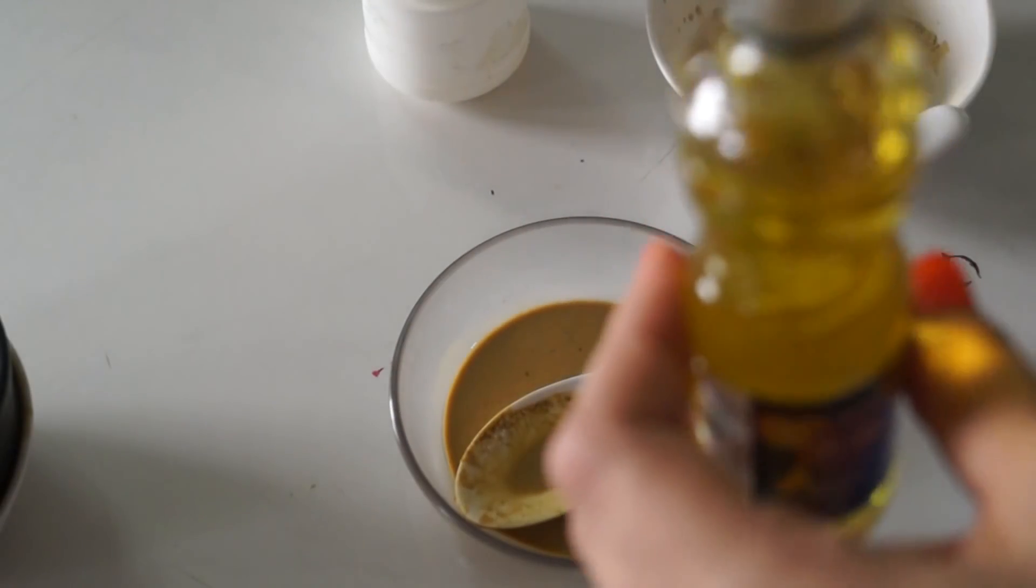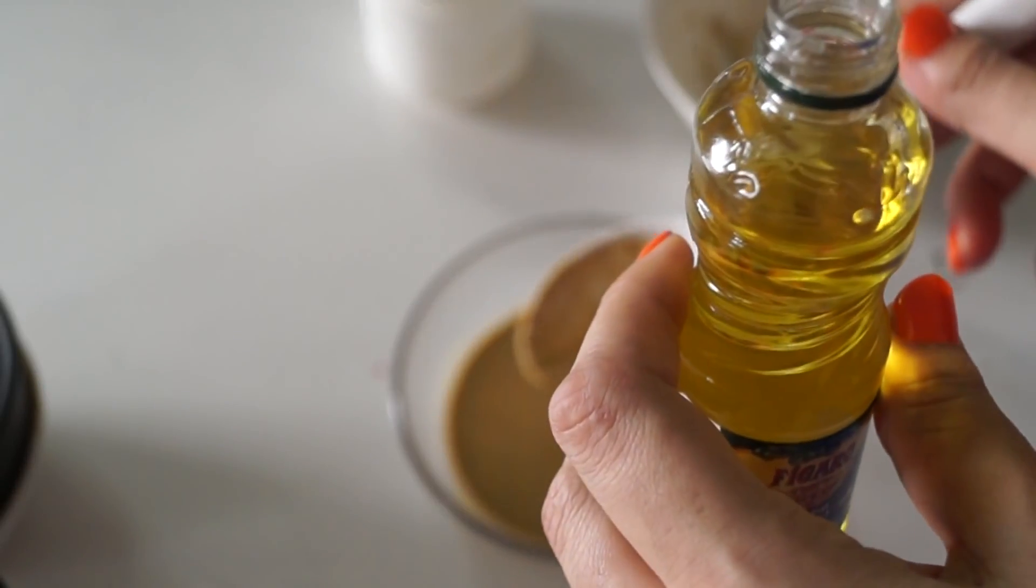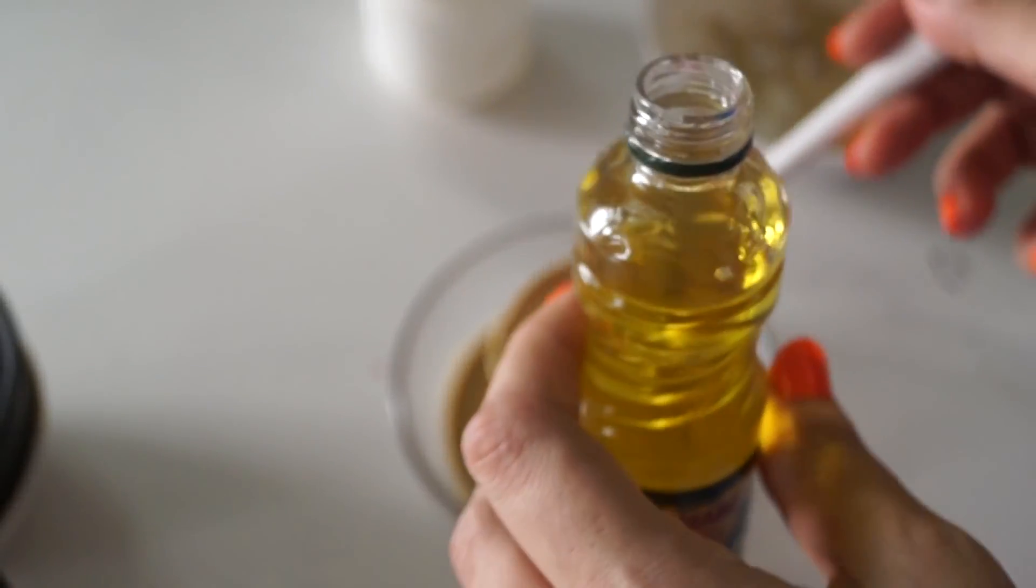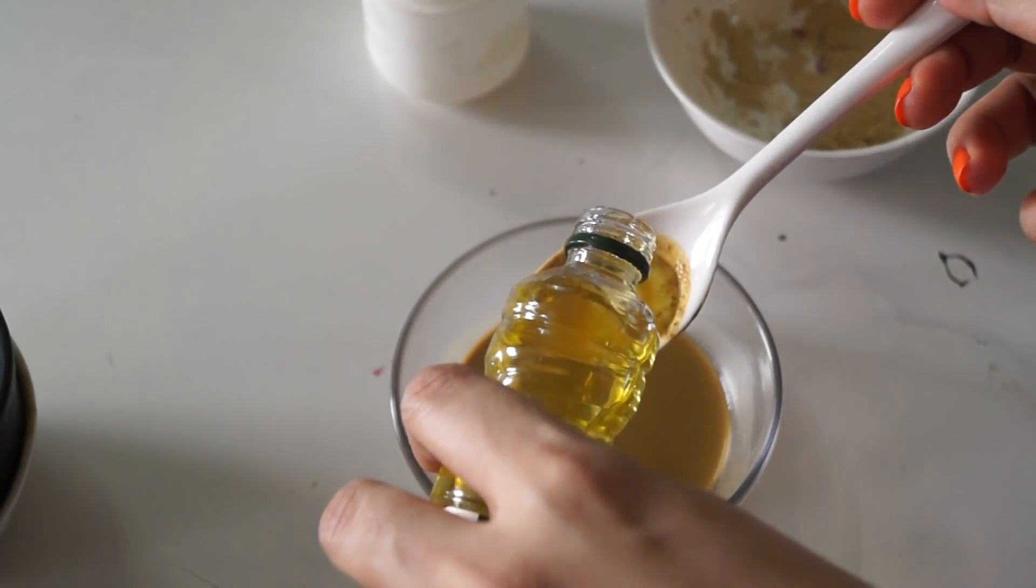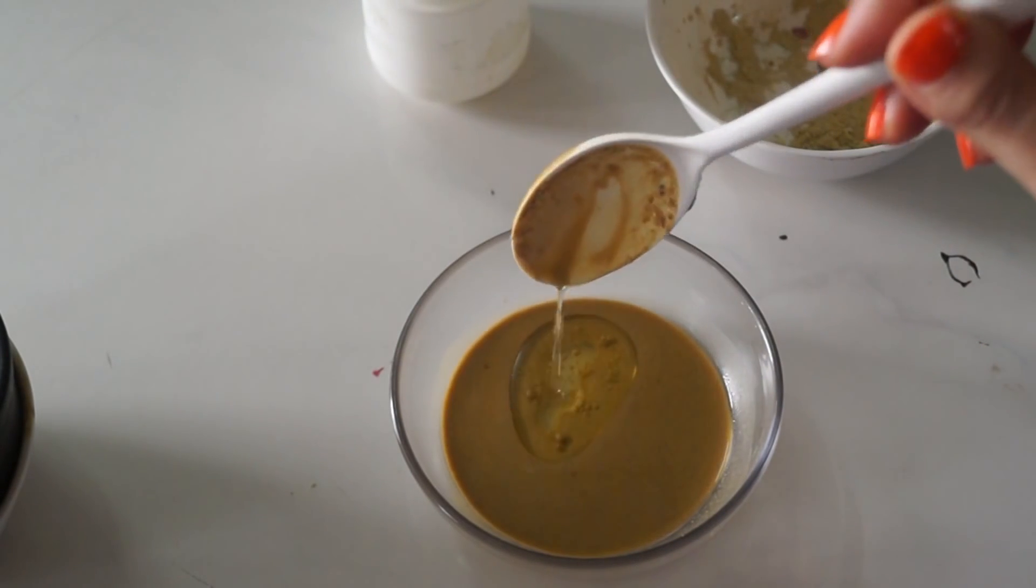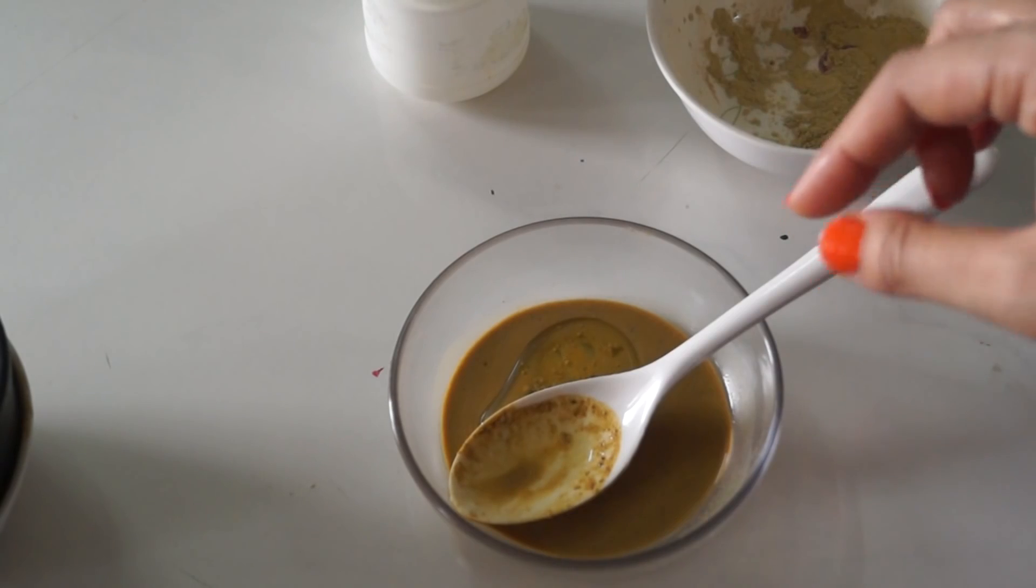So I am going to add the olive oil. Olive oil is an amazing skin moisturizer as well as a skin lightener. So I am going to add around one small tablespoon of olive oil. You can also use almond oil, sweet almond oil.